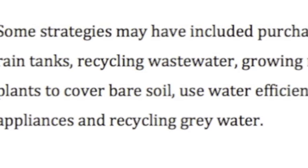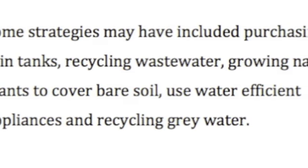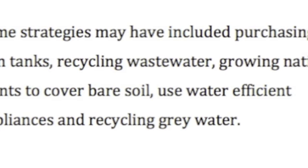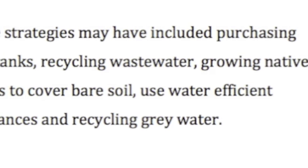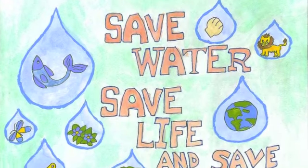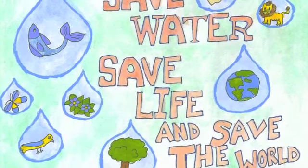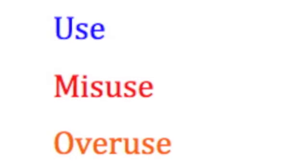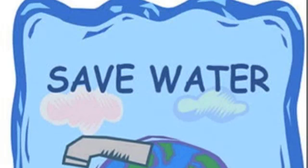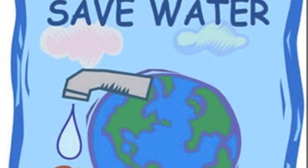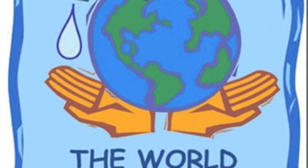Some of your strategies may have included purchasing rainwater tanks, recycling waste water, growing native plants to cover bare soil, using water-efficient appliances, and recycling grey water. In short, any way to save as much water as you can. In summary, we've spoken about the use, misuse, overuse and sustainable use of water. There are so many uses of water, and it's clear that it's absolutely essential to our survival. Thank you.